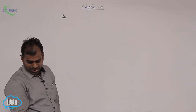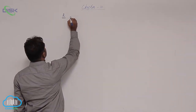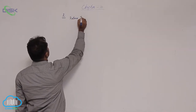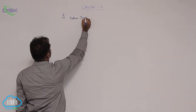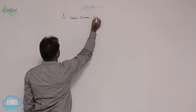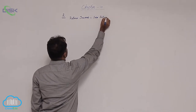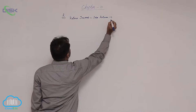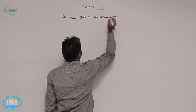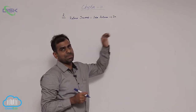If you see in the second problem, there is return inwards. Return inwards is nothing but sales returns. Sales returns show debit balance, so while preparing your trial balance, take that amount in the debit amount column.